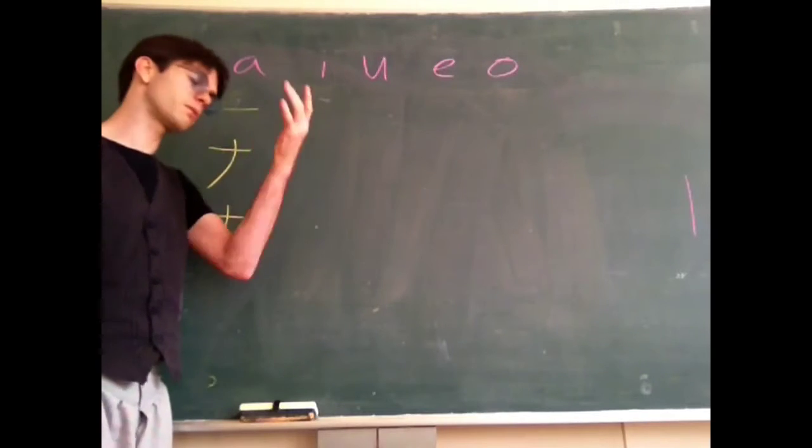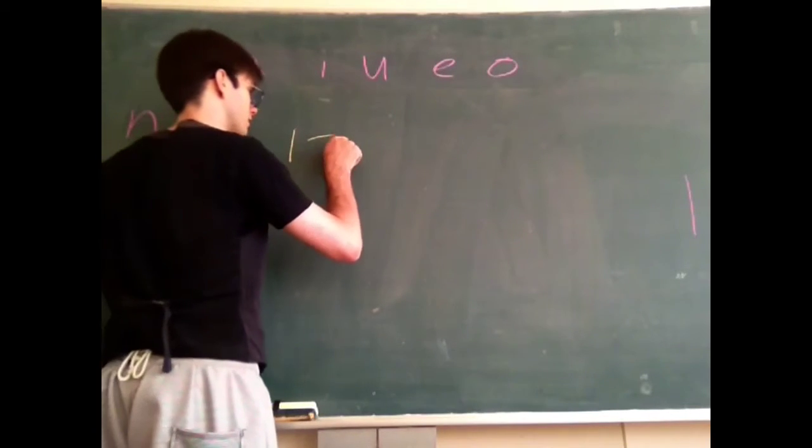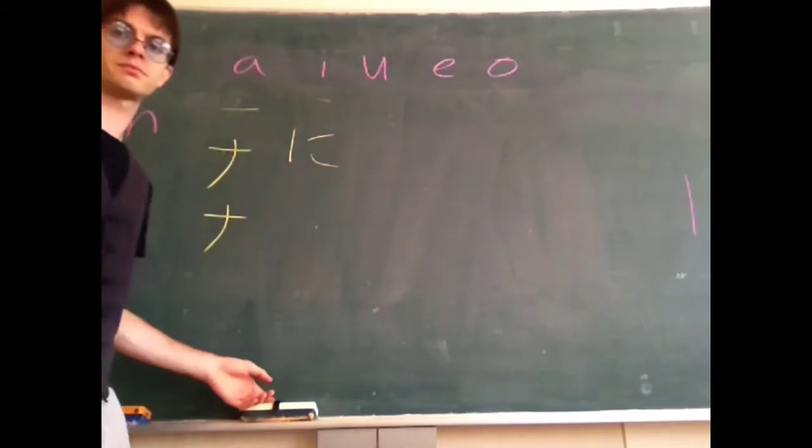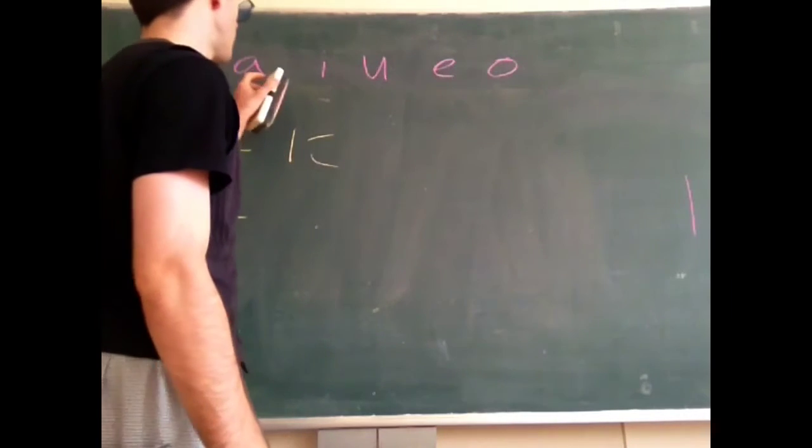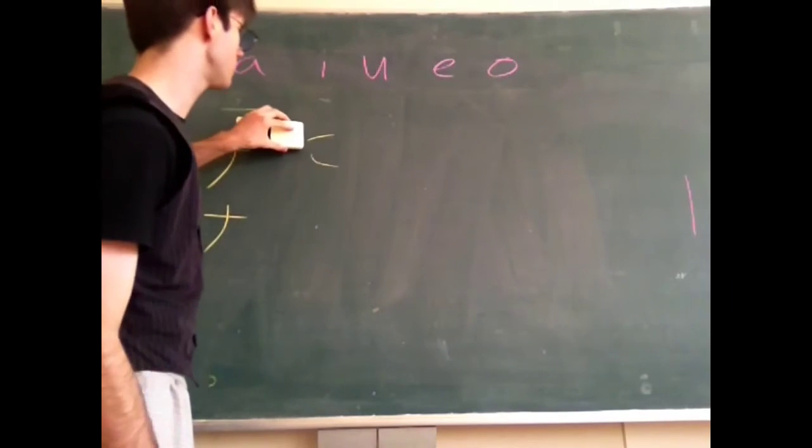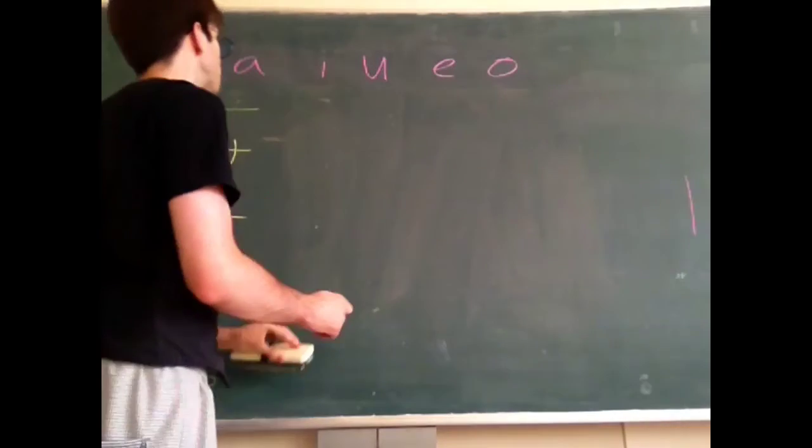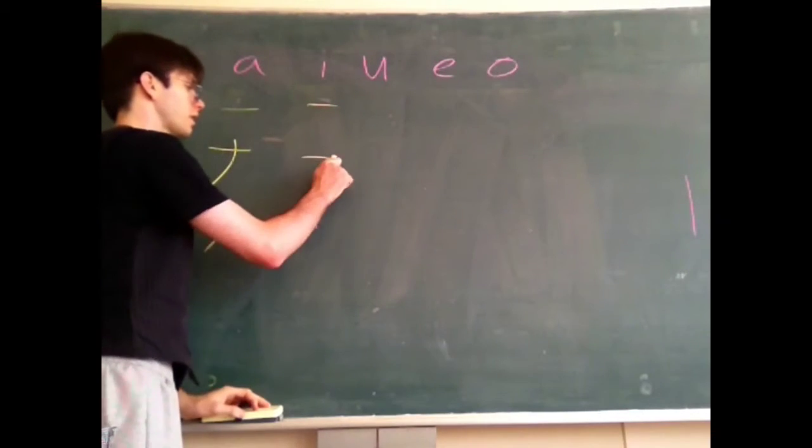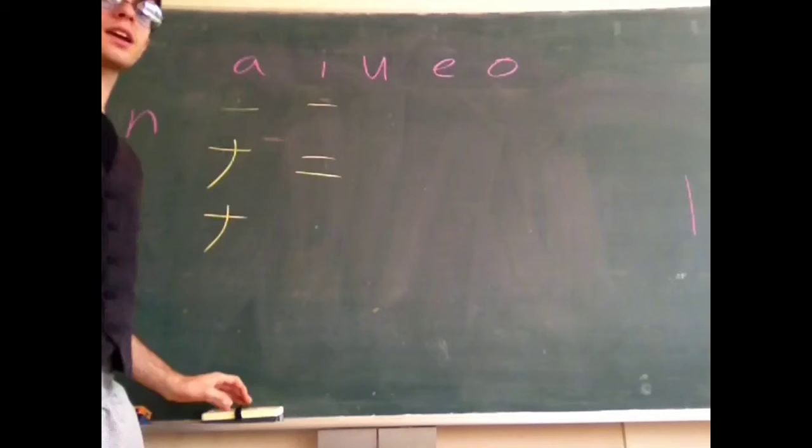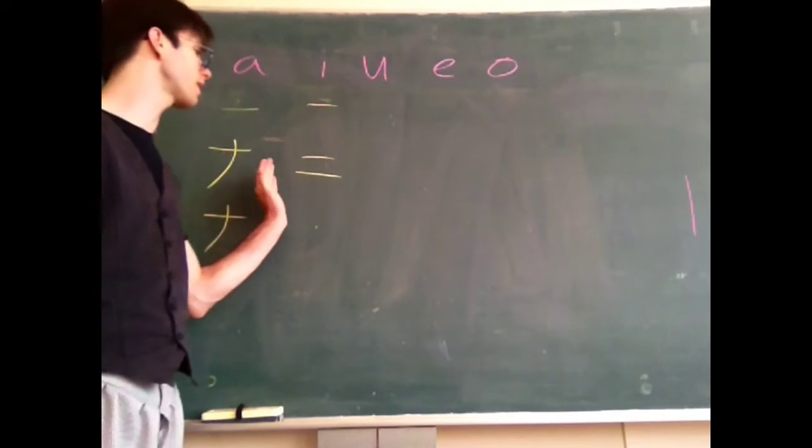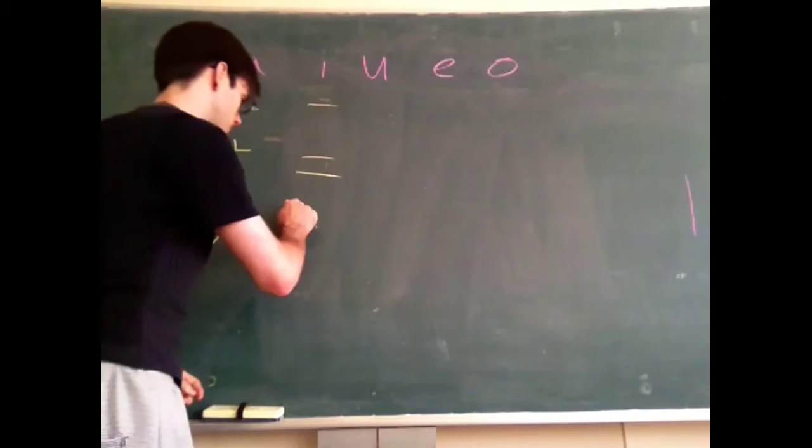Next up is ni. Remember before we had this thing, kind of like that. This one is just take this, erase that bit, and make these two straight. So first one is here, second one is here. It's like an equal sign with the bottom line slightly longer than the top one. Ni.